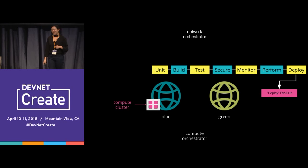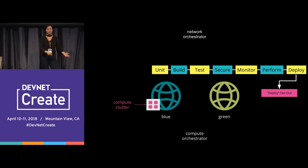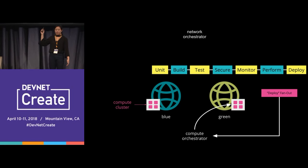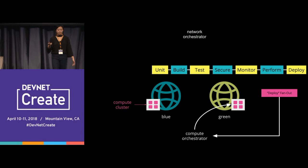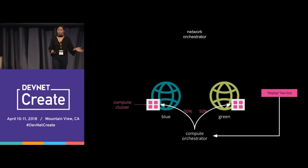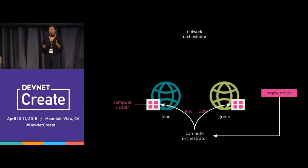We did a deploy fanout — in pipeline nomenclature, it fans out to another pipeline. It called our compute pipeline, which would go through its sequence and deploy one compute cluster — our canary — onto the green network. Then the compute orchestrator shifted deployments: 50% of new clusters went to blue and 50% to green, until they reached equal cluster counts.